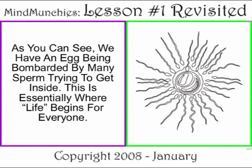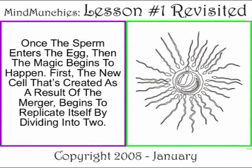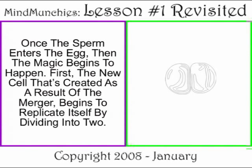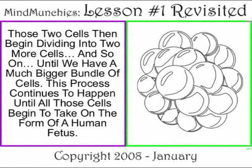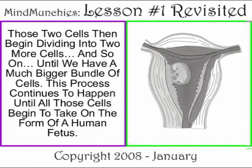This is essentially where life begins for everyone. Once the sperm enters the egg, then the magic begins to happen. The new cell that's created as a result of the merger begins to replicate by dividing itself into two. Those two cells then begin dividing into two more cells and so on, until we have a much bigger bundle of cells. This process continues until all those cells begin to take on the form of a human fetus.